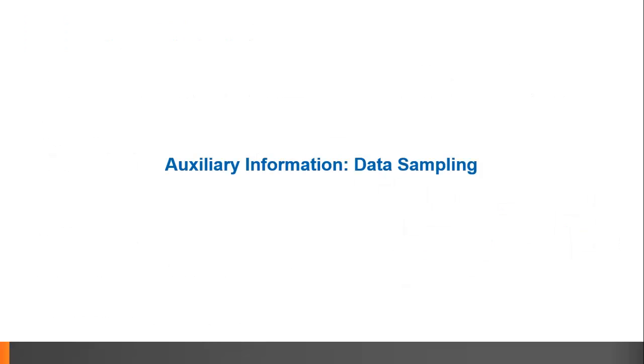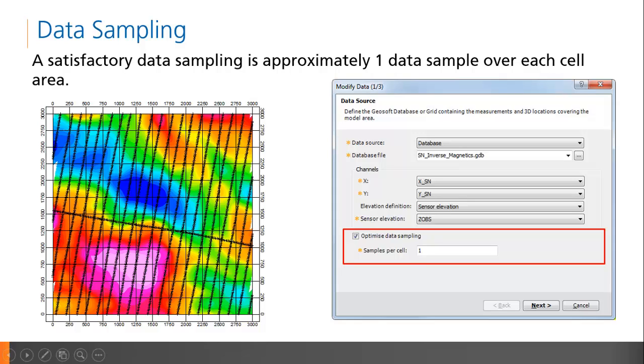Speaking of data sampling, let's turn to another auxiliary tip for improving the efficiency of your inversion. In VOXI, your data is filtered and desampled by default, as seen in this dialog box here.